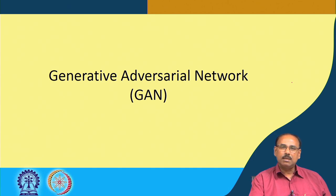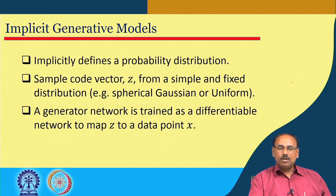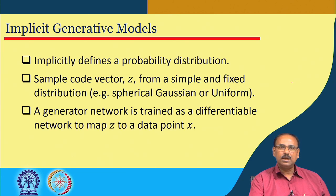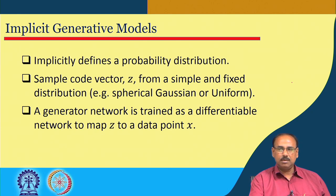Now briefly I will discuss generative adversarial networks. GAN is another form of generative model for reconstruction of data from latent code. Unlike variational autoencoder where the probability distribution of the latent code was quite explicit, in GAN this is implicitly defined. You sample a code vector z from a simple fixed distribution — say normal or uniform — feed it to the generator network trained as a differentiable network, and this generator maps the latent variable z to the data point x.